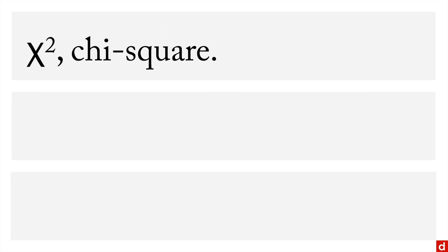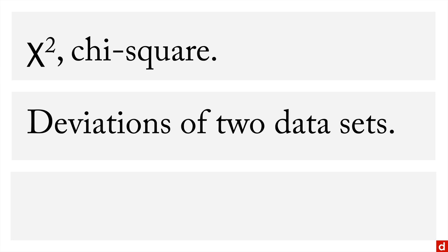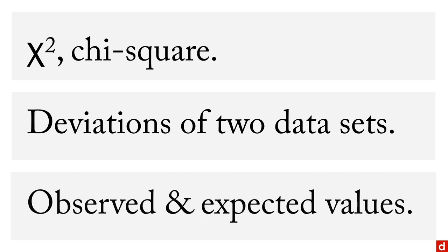And then there's chi-squared — again, a lowercase Greek C that looks like an X. Chi-squared is used for examining the deviations between two data sets, specifically between the observed data set and the expected values or a model you created — for example, how many frequencies you expect in each category.